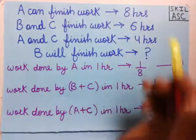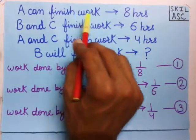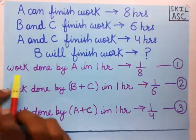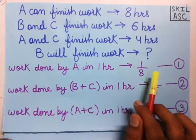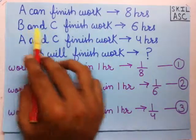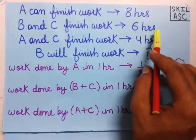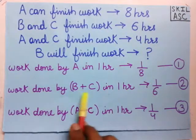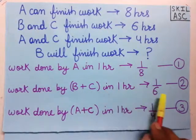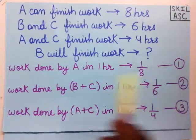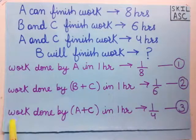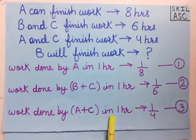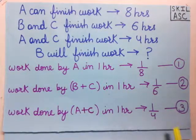Using rule number one, if A can finish the work in 8 hours, then work done by A in one hour is 1/8. Similarly, if B and C finish the work in 6 hours, then work done by B and C in one hour is 1/6. If A and C finish the work in 4 hours, then work done by A and C in one hour is 1/4.